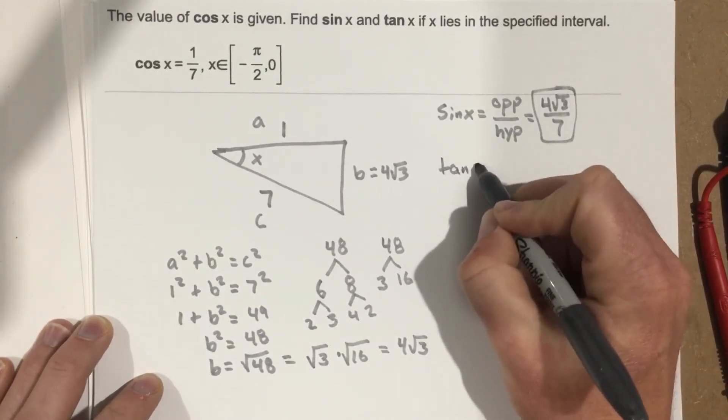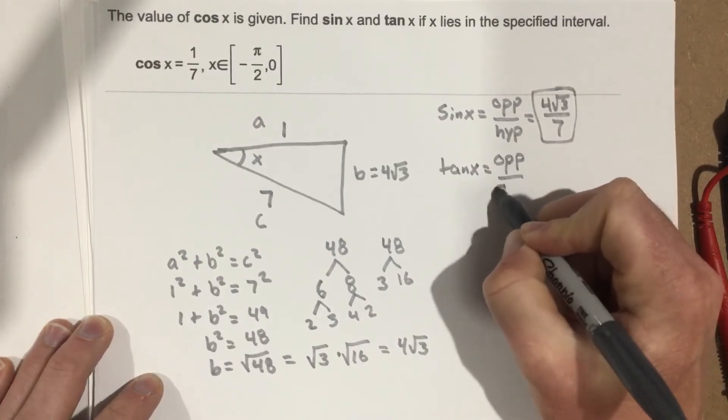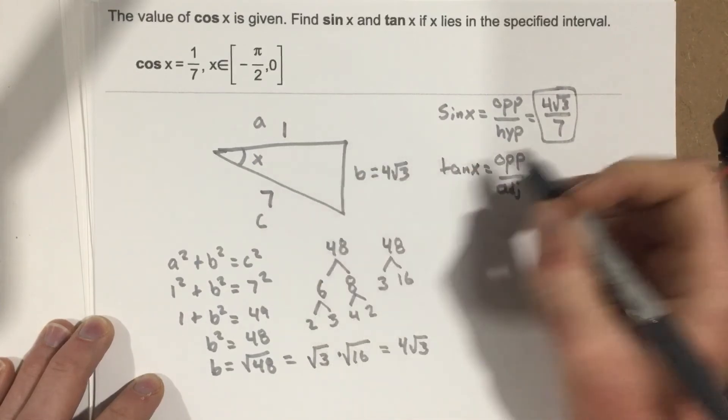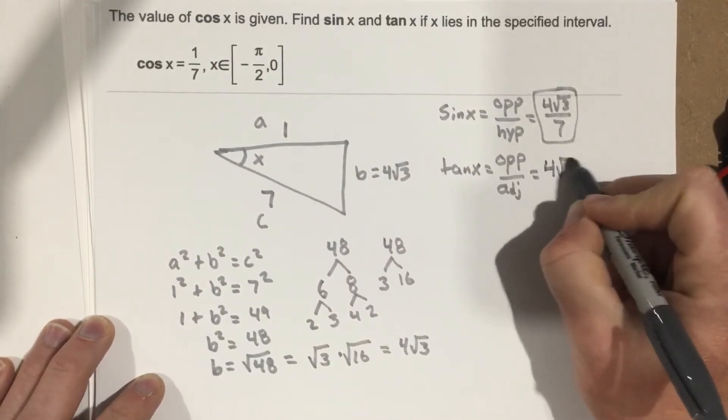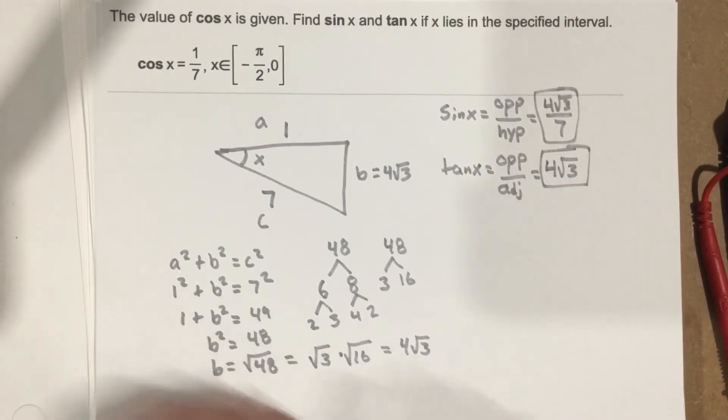Tan x, then, is the opposite over the adjacent. Opposite, which is 4 root 3, over 1. Well, 4 root 3 over 1 is just going to be 4 root 3. And those are the two solutions for this problem.